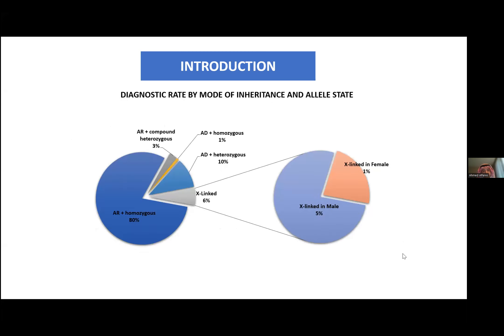Knowing that exome sequencing could provide a full screening for all genes, there is specific information limited to our population that we can use during analysis. For example, we know the majority of disease-causing variants in our population are autosomal recessive and homozygous. We use this information when analyzing any variant — a homozygous variant in an autosomal recessive disease is the bulk of the disease-causing variant in our population.